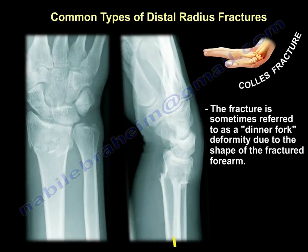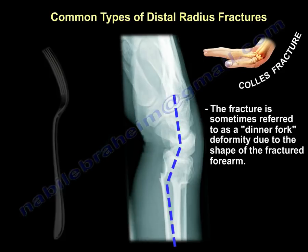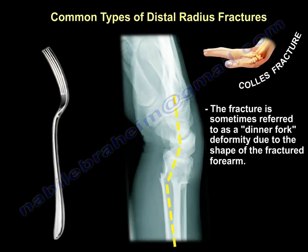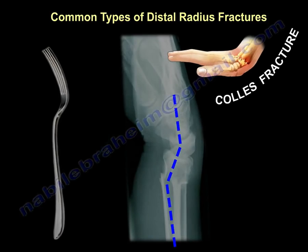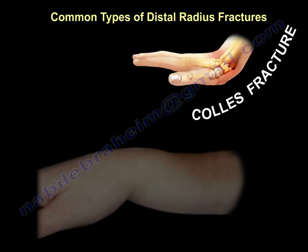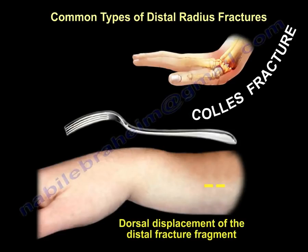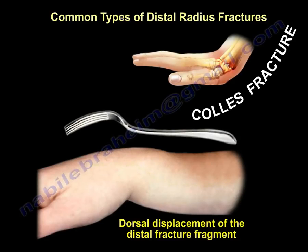The fracture is sometimes referred to as a dinner fork deformity fracture due to the shape of the fractured forearm. You can see that the deformity looks like a dinner fork, with dorsal displacement of the distal fragment.